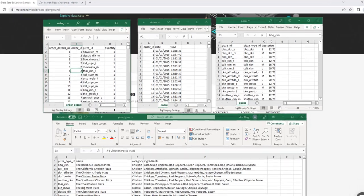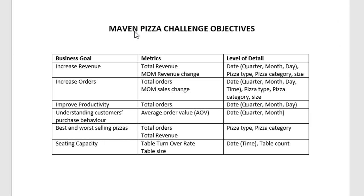I'm documenting our business goals, objectives, and the metrics we'll need. The first objective is to increase revenue, so we'll need a total revenue metric calculated with DAX in Power BI — or in Tableau or Excel if you're using those tools. We'll also look at month-over-month revenue change, since this data is only for 2015 and year-over-year comparison isn't possible.